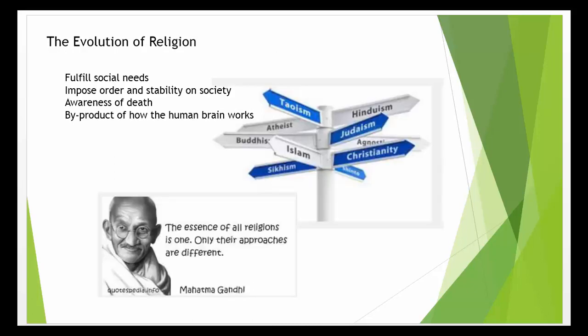Many ideas have been proposed to explain the evolution of religion. Some have suggested that religion arose to fulfill social needs, imposing order and stability on society. Some have focused on the human awareness of death. Others see religion as a byproduct of how the human brain works — thus we feel that we occupy our bodies, not that we are our bodies, and we infer purpose, goals, intention, and design where there is none, attributing human characteristics to a range of inanimate objects.